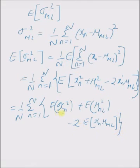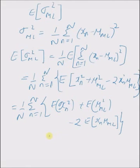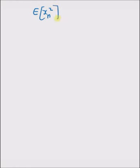Now we evaluate these three terms separately. The first term is the expectation of x_n squared, which is equal to μ² plus σ². This result is from the previous video.